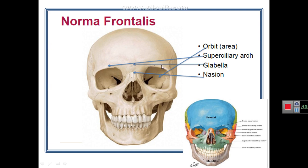The anterior orbital aperture is quadrilateral with four borders. The upper border is formed by the frontal bone. The lateral border is formed by the frontal bone and the zygomatic bone — specifically the zygomatic process of the zygomatic bone. The inferior border is formed by the zygomatic bone and maxilla. The medial border is formed by the frontal bone and maxilla — specifically the maxillary process of the frontal bone and the frontal process of maxilla.